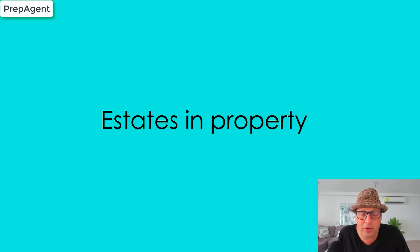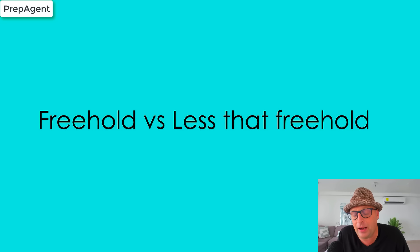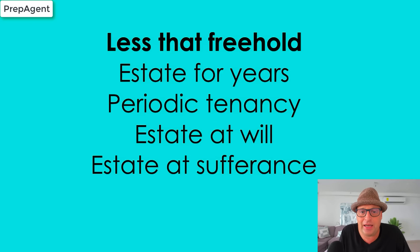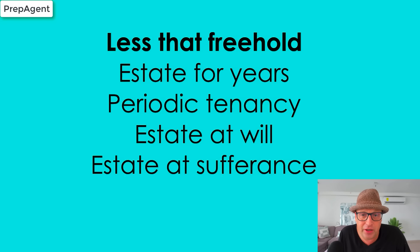The second concept is about estates in property. There are two types of estates: freehold estates and less than freehold estates. Freehold estates tend to be indefinite in duration; less than freehold estates are for a more limited amount of time. Freehold estates basically insinuate ownership; less than freehold estates are leases. The four types of less than freehold estates are: estate for years, periodic tenancy, estate at will, and estate at sufferance.